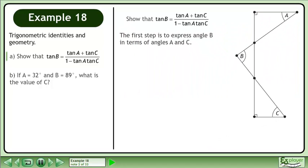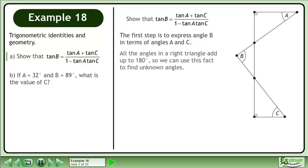The first step is to express angle B in terms of angles A and C. All the angles in a right triangle add up to 180 degrees, so we can use this fact to find unknown angles.